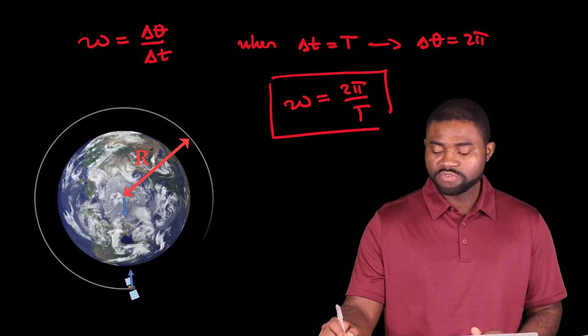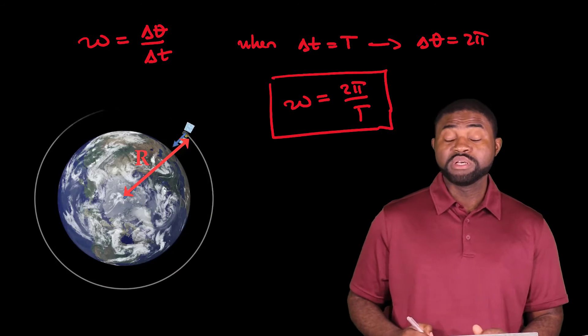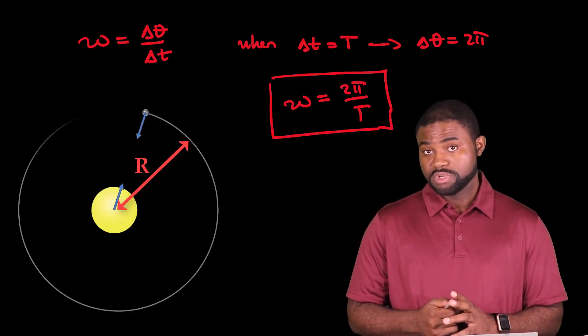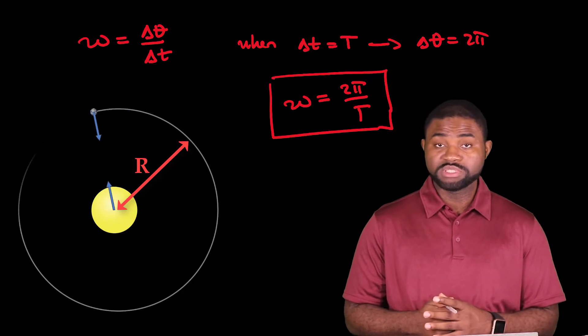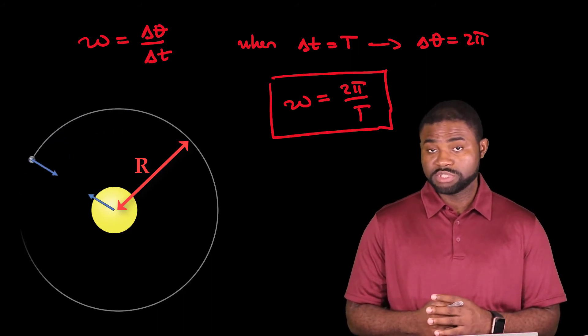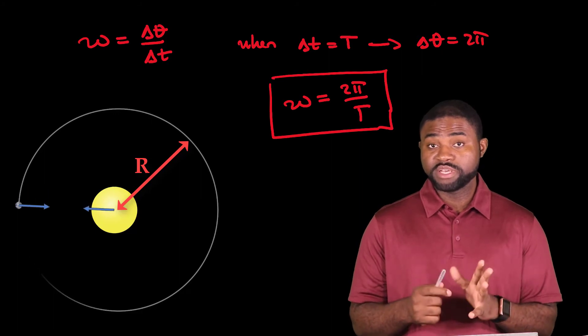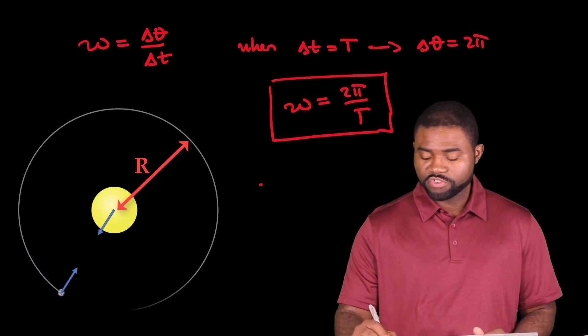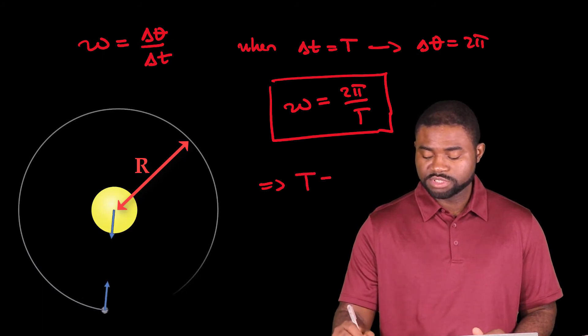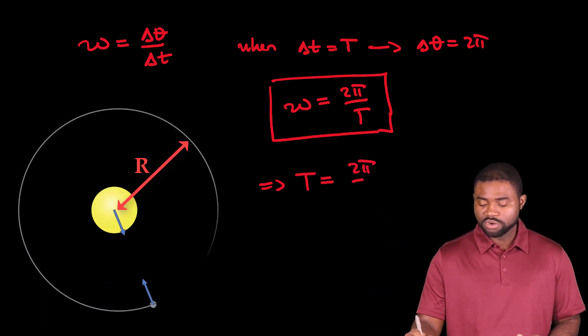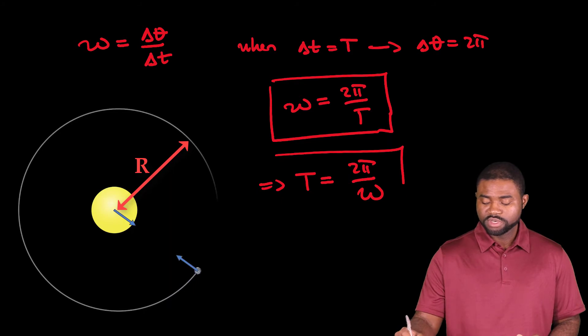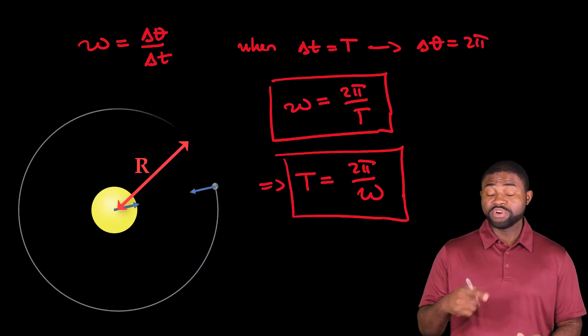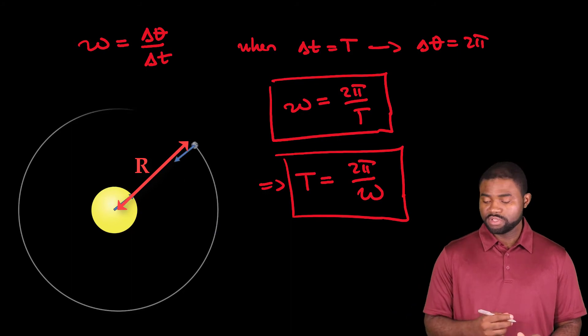This is another formula to calculate the angular speed of an object moving around in a circle, where capital T represents the period of motion of the object. That is the time it takes to go around the circle once. Another way we can express this is that the period t is equal to 2 pi all divided by Omega. This is a very important formula that we will use over and over again over several topics in this course.